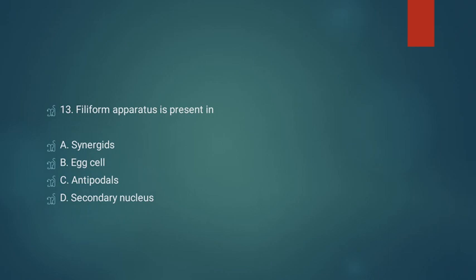Question number thirteen: filiform apparatus is present in. Option A: synergids. Option B: egg cell. Option C: antipodals. Option D: secondary nucleus. This is a direct question — filiform apparatus is present in synergids. Option A is the correct answer.